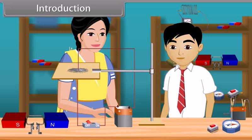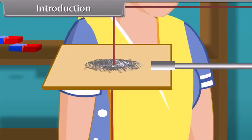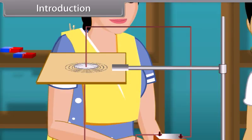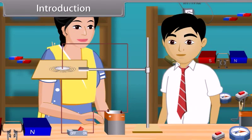After setting up the arrangement, she switches on the circuit. When she switches on, some movement is shown in the iron dust particles and they start arranging into a concentric circles pattern. She performed this experiment to show the magnetic effect of current. The iron dust particles arranged into the concentric circle pattern due to the magnetic field generated by the electric current.